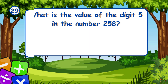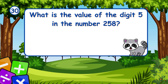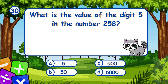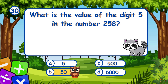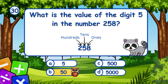What is the value of the digit 5 in the number 258? It's B, 50. The digit 5 in 258 is in the tens place, so its value is 50.